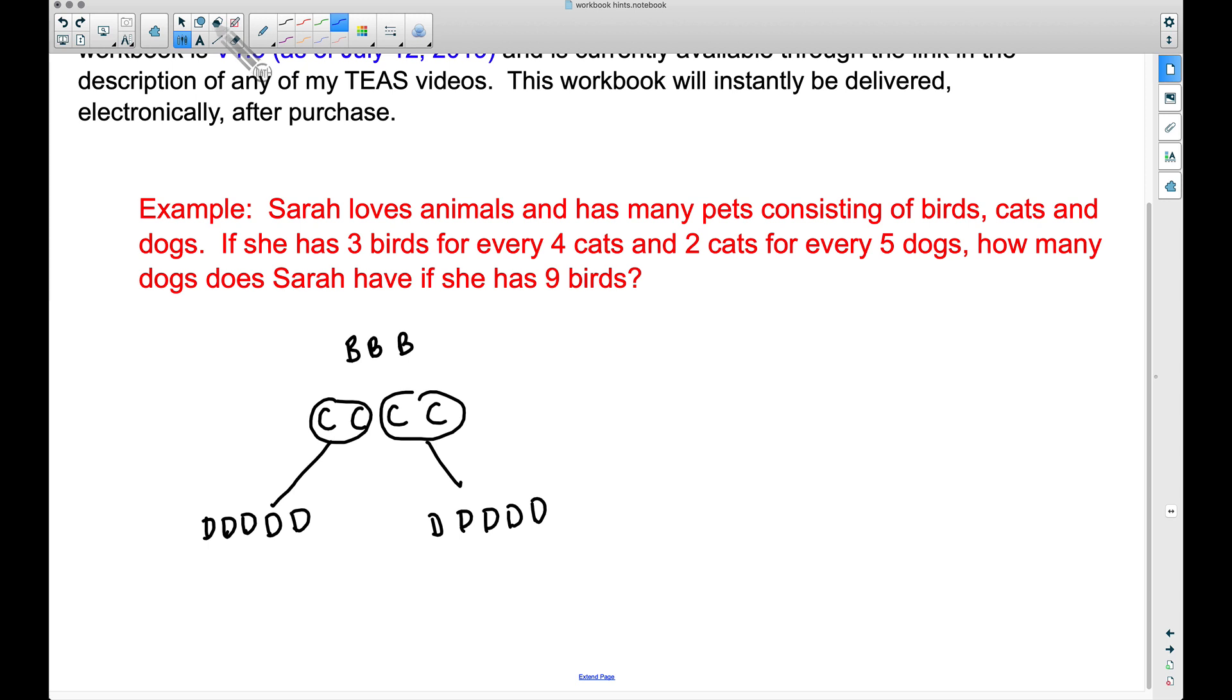So let's make sure we understand this here. I'm going to put a box around this. And again, for every three birds there are four cats, so bird, bird, bird, we have four cats. And then for every two cats there are five dogs. So that's why I've circled these two cats, we have five dogs there. Circle these two cats, we have five dogs there.